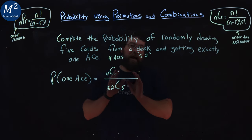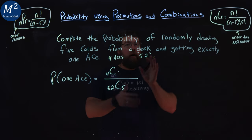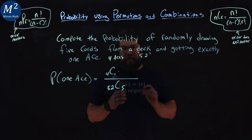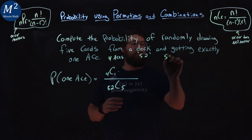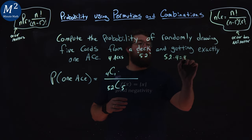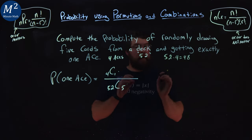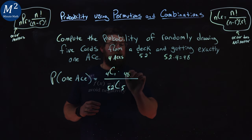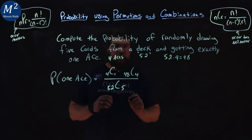So now we have to grab, for the other four cards, all the cards that are not aces. So our 52 minus four gives me 48. There are 48 cards that are not aces, and we have to choose from them four more cards.